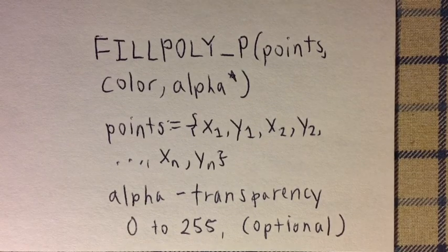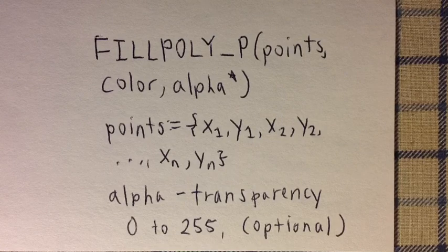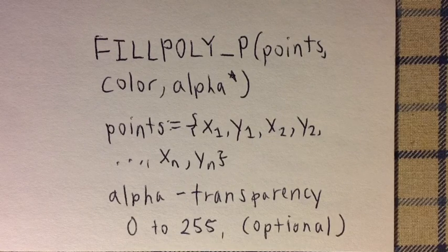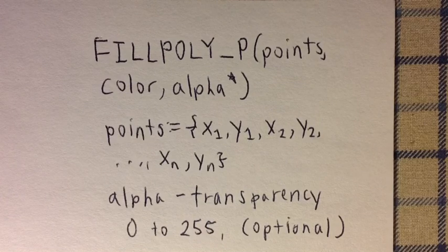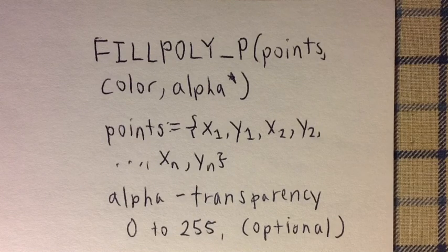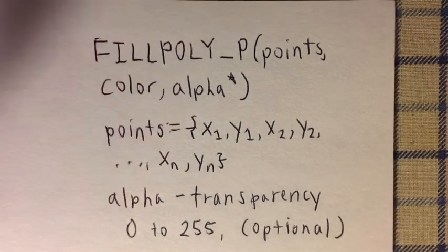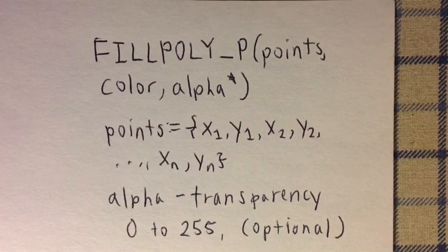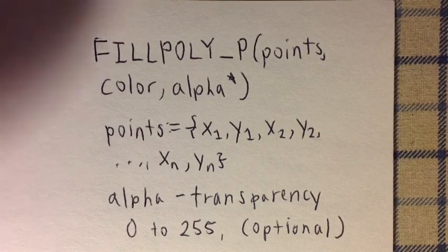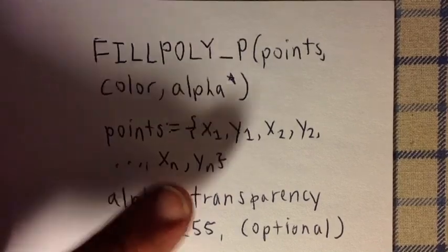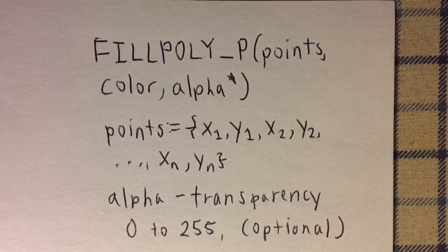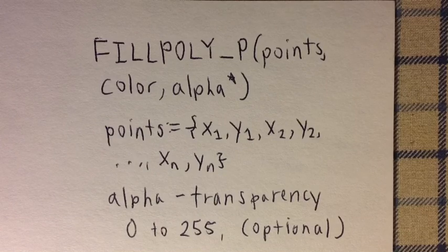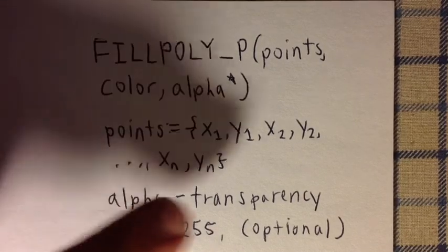The points argument consists of values that make up the vertices of the polygon. We start at point 1, which is designated by x1, y1, then point 2, which would be x2, y2, and so on, to the last point, which is designated by xn, yn.